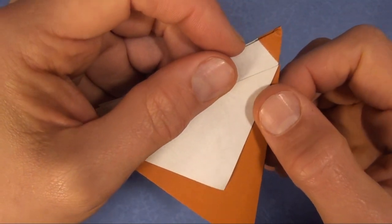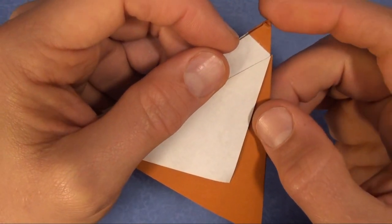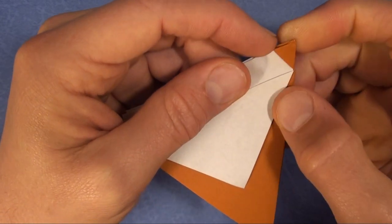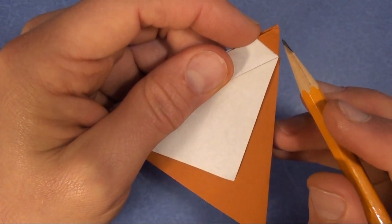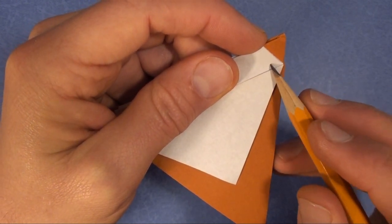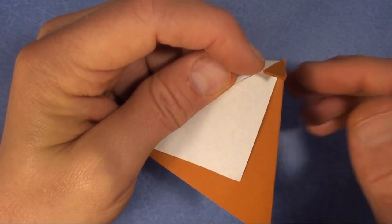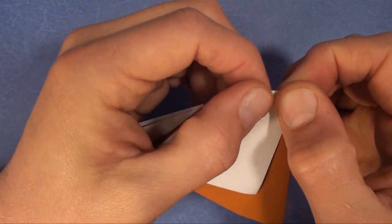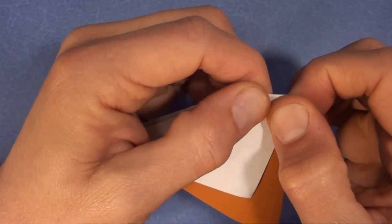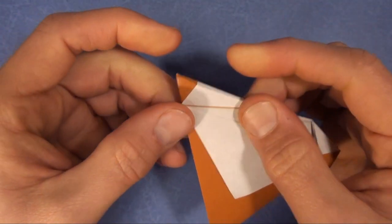Now we're going to take this corner and fold it down. The resulting crease is going to be perpendicular to this edge. So it's going to come right out this way. Just like that. And same thing over here.